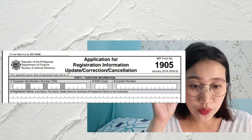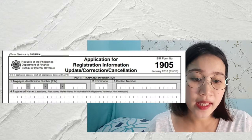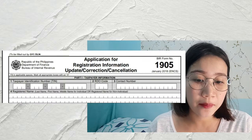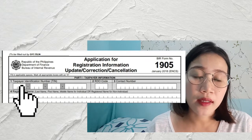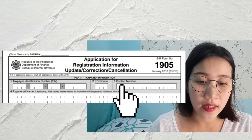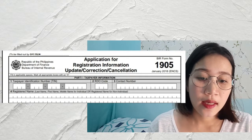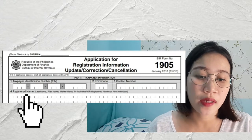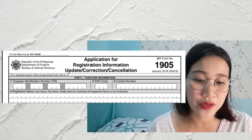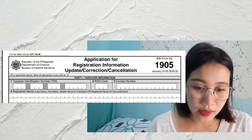Okay, so yung mga details na kailangan nating i-fill out doon sa 1905 form: if you check doon sa Part 1, Taxpayer's Information, kailangan lang po nating ilagay yung ating TIN number and then yung contact number po — huwag po natin kalimutan. Sa number 4 naman, Registered Name — of course, yung last name, first name, and yung middle name.